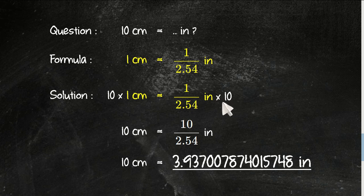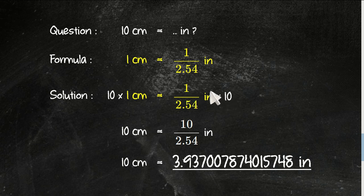So 10 times 1 equals 10, and 10 divided by 2.54 equals 3.937. That's the answer. Thank you for watching and bye-bye.